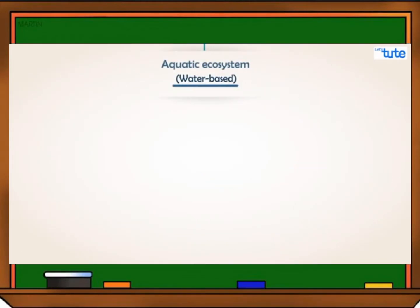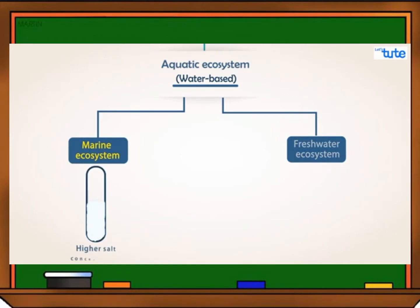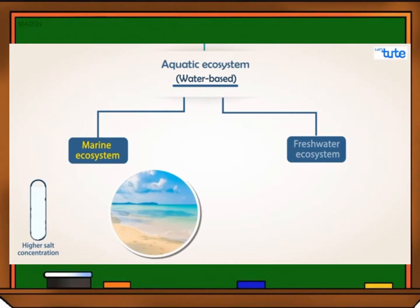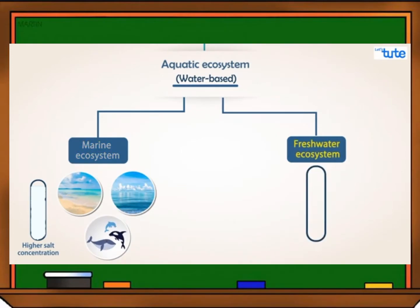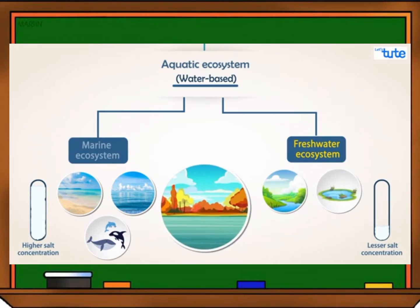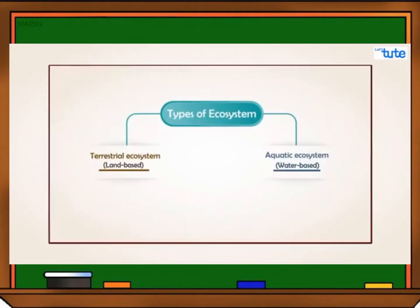Now let's explore aquatic ecosystems. There are two main types based on salt concentration: the marine ecosystem and the freshwater ecosystem. The marine ecosystem contains higher salt concentration and includes seas and oceans, with a wide variety of organisms. The freshwater ecosystem has lesser salt content and includes rivers, ponds, lakes, and streams, with comparatively fewer varieties of organisms. With this, we end our session on what an ecosystem is and its classification.